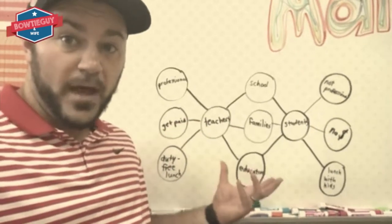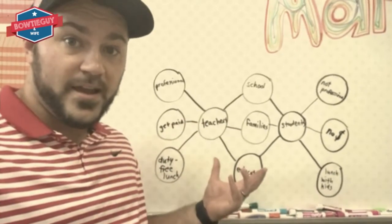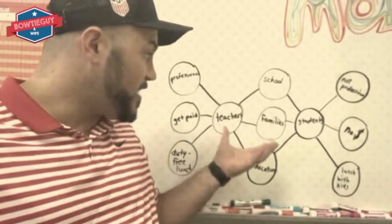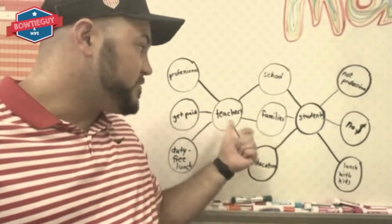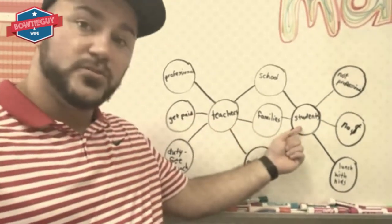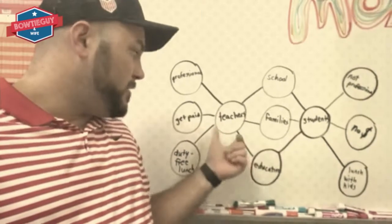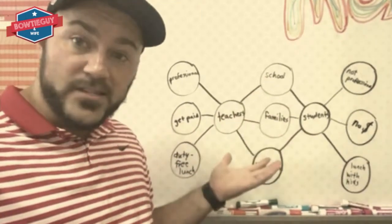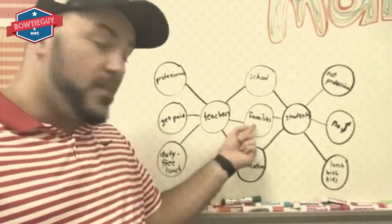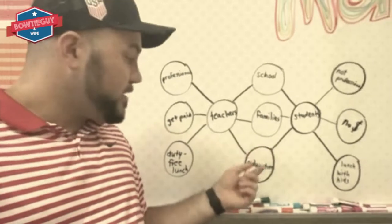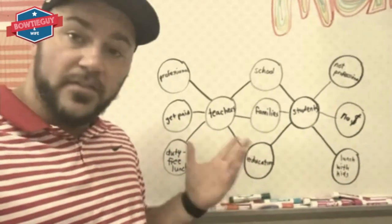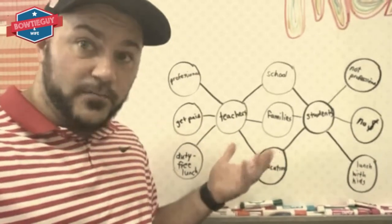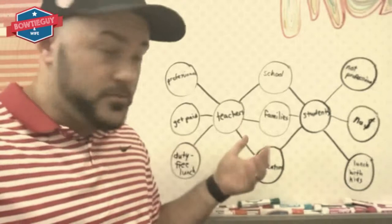This right here is a double bubble map — a comparing and contrasting map where we're comparing teachers and students. Now what do teachers and students have in common? Well they both meet at school, they both have families, and they're both committed to education or being educated.